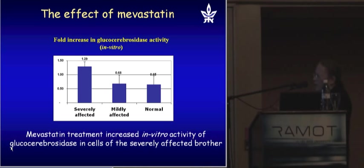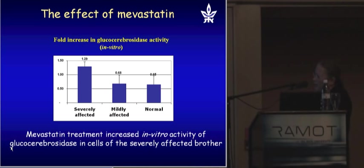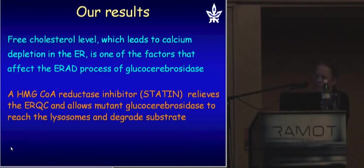Most importantly, for Gaucher patients — and this will be true for all patients with other lysosomal diseases — we could increase lysosomal enzymatic activity. By treating the cells with mevastatin, we raised enzymatic activity two-fold compared to normal or the mildly affected brother. To summarize: elevated free cholesterol, which leads to calcium depletion in the ER, is one of the factors affecting ER-associated degradation of glucocerebrosidase. HMG-CoA reductase inhibitor — statin — relieves the ERQC and allows mutant glucocerebrosidase to reach the lysosomes, where it can degrade substrate.